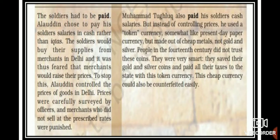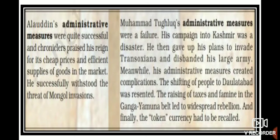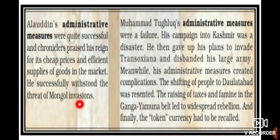Alauddin Khilji's administrative measures were quite successful. Chroniclers praised his reign for cheap prices and efficient supplies of goods in the market. He successfully withstood the threat of Mongol invasions. He was a very good administrator — praised because goods in his kingdom were available at cheap rates and he bravely fought against the Mongols.